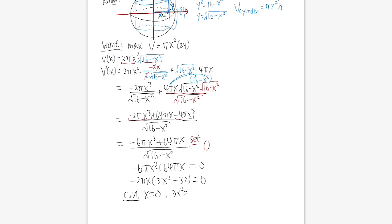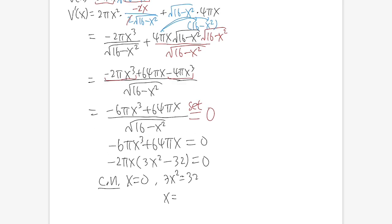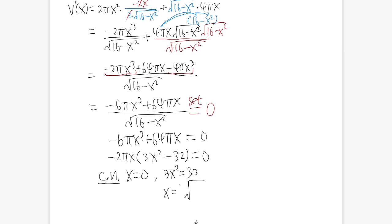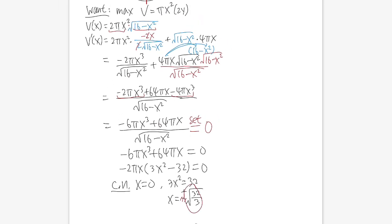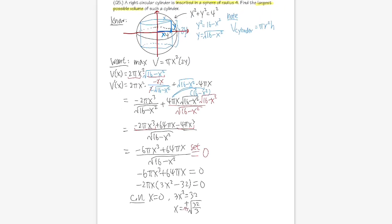The volume is V = x²y (area of square cross-section times length). From the constraint: y = 90 − 4x. Substituting: V(x) = x²(90 − 4x) = 90x² − 4x³. Taking the derivative: V'(x) = 180x − 12x². Setting equal to zero and factoring: 12x(15 − x) = 0, giving critical numbers x = 0 and x = 15.